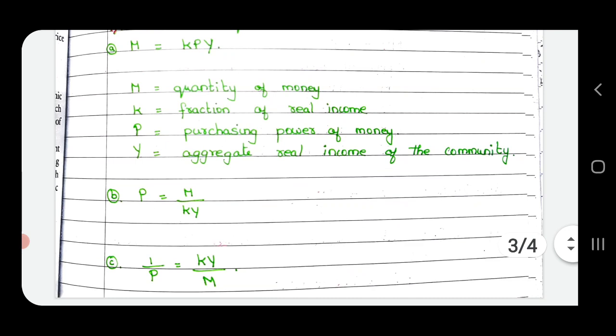P is equal to M by KY. 1 by P is equal to KY by M. This is reciprocal of the equation.